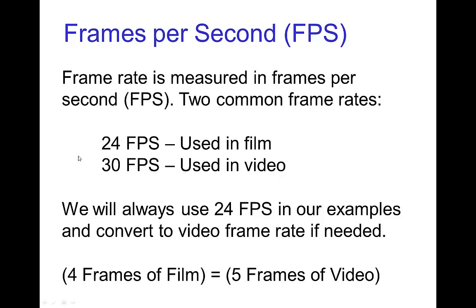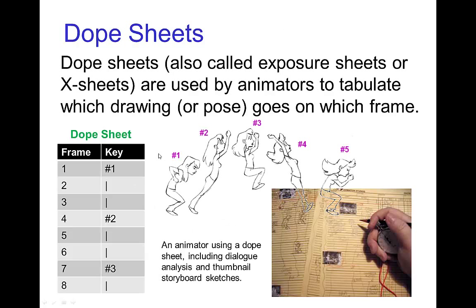In planning an animation, in terms of timing and spacing for drawings, in traditional animation especially, they use these dope sheets or exposure sheets or X sheets. And the idea here is to have a tabulation that tells you which drawing goes on which frame.